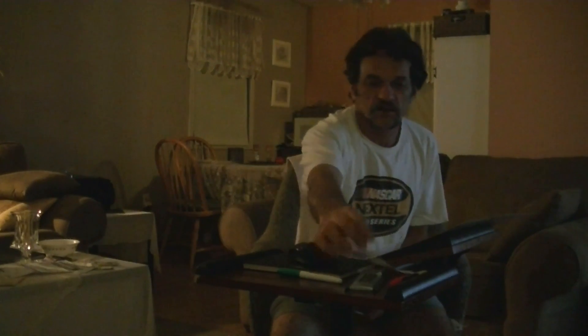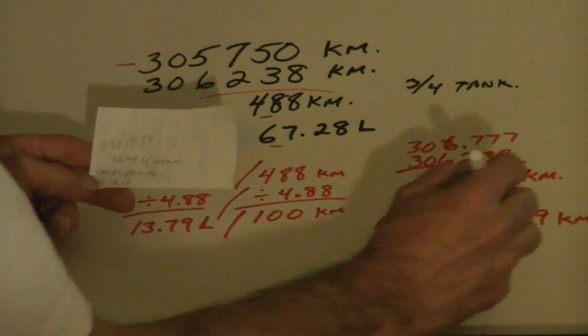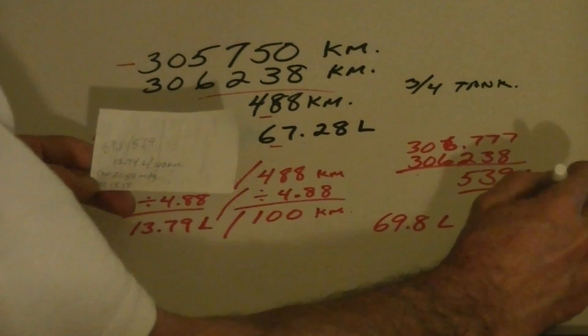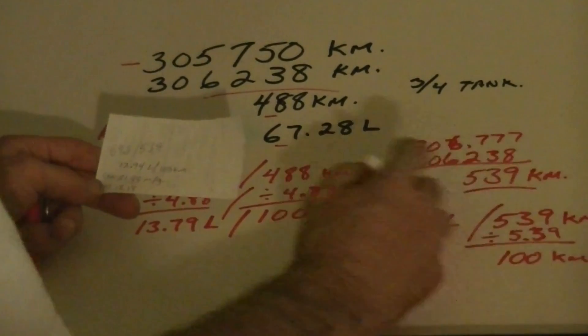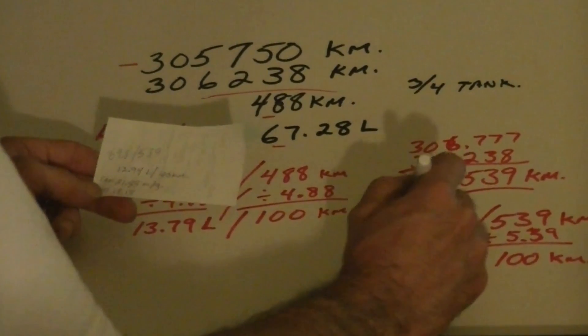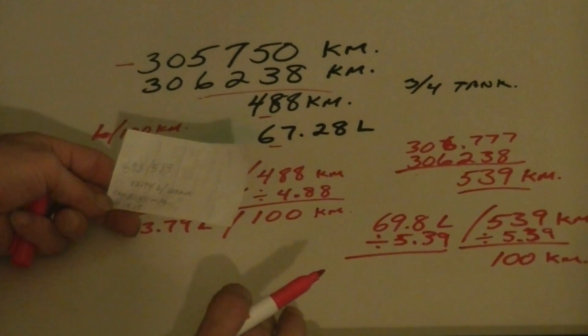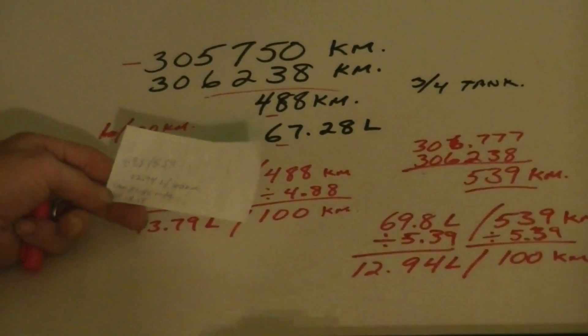So that's not bad for that big truck, but that's mostly just local and town driving. On the second trip calculation, I divide by 5.39 — just move the decimal point over two places — which brings it down to 100 kilometers. Do the same on the fuel side, divide by 5.39, and that worked out to 12.94 liters per 100 kilometers.